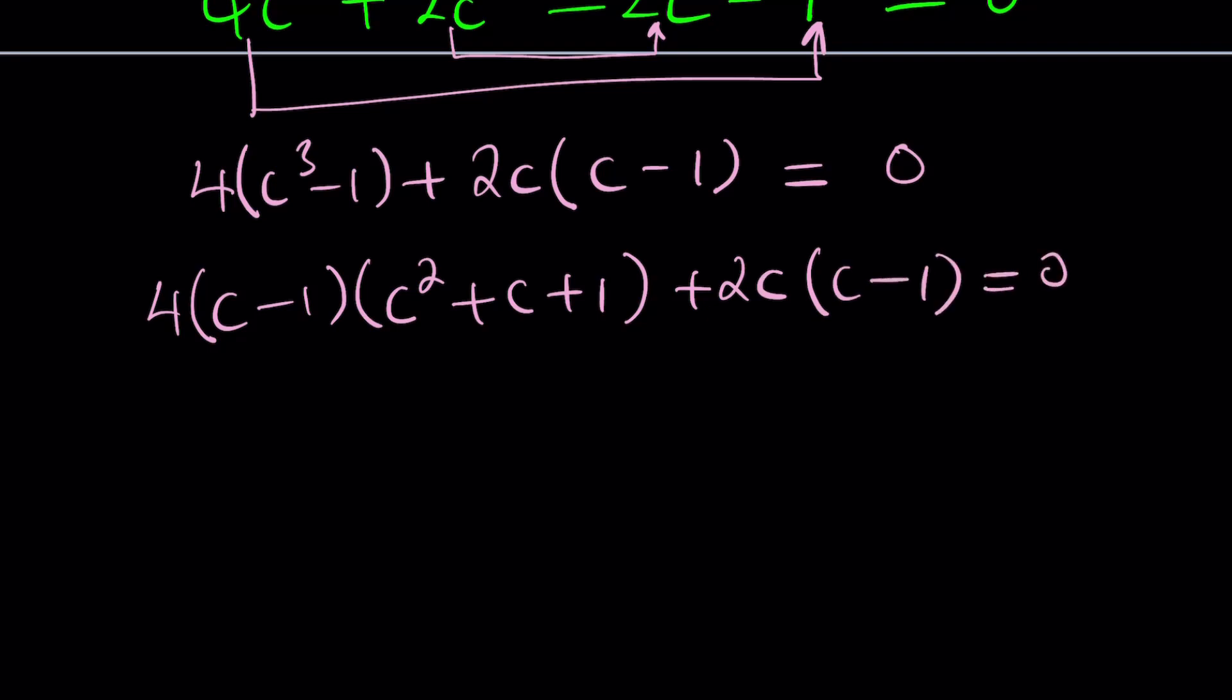So c minus 1 is a factor. And the other factor comes from 4 times this, which is 4c squared plus 4c plus 4. And the other factor is going to come from here, plus 2c, and of course we can kind of combine them and write this as 6c.